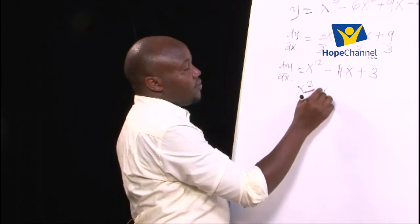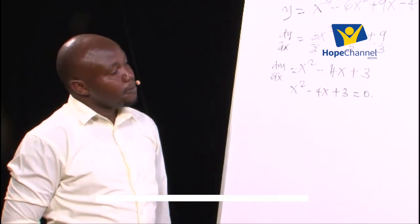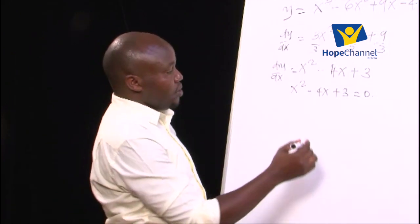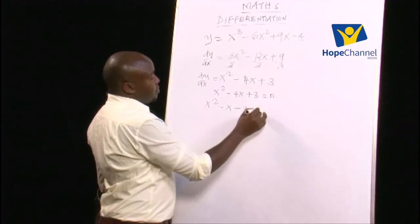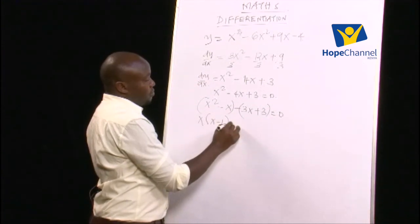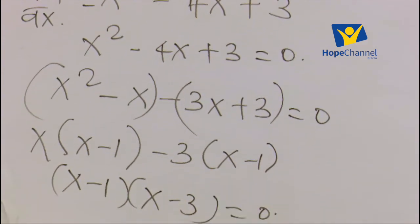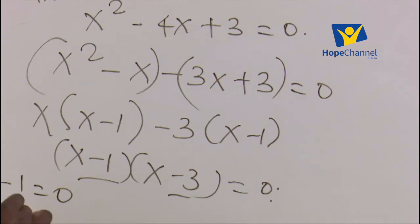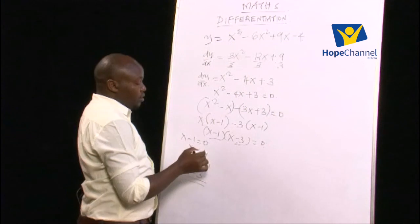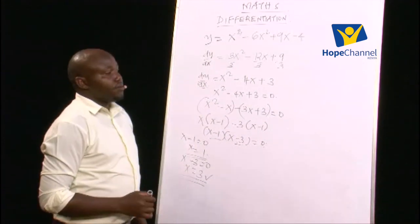Solving x² − 4x + 3 = 0 using product-sum rule: x² − x − 3x + 3 = 0, factorising to (x − 1)(x − 3) = 0. So x = 1 and x = 3 are the turning points of the curve. These x-values mark where dy/dx = 0.